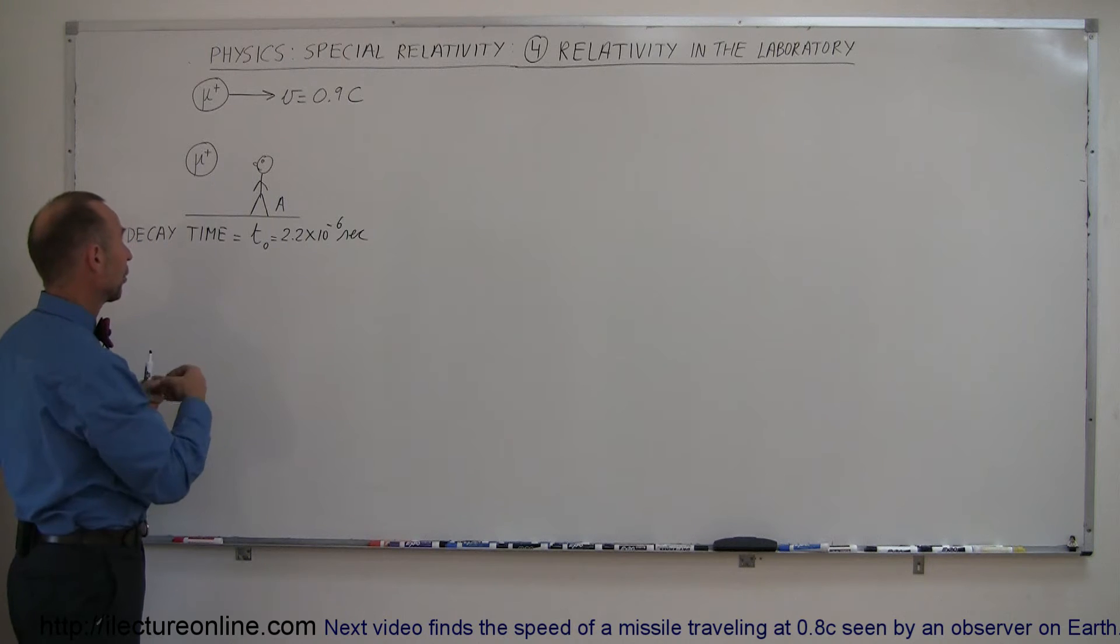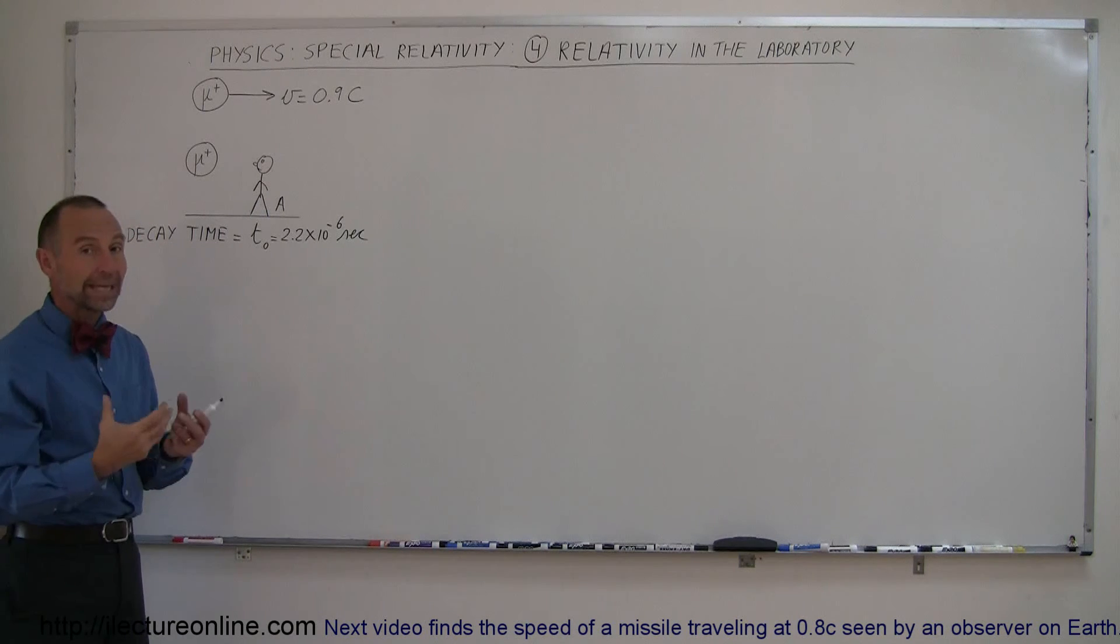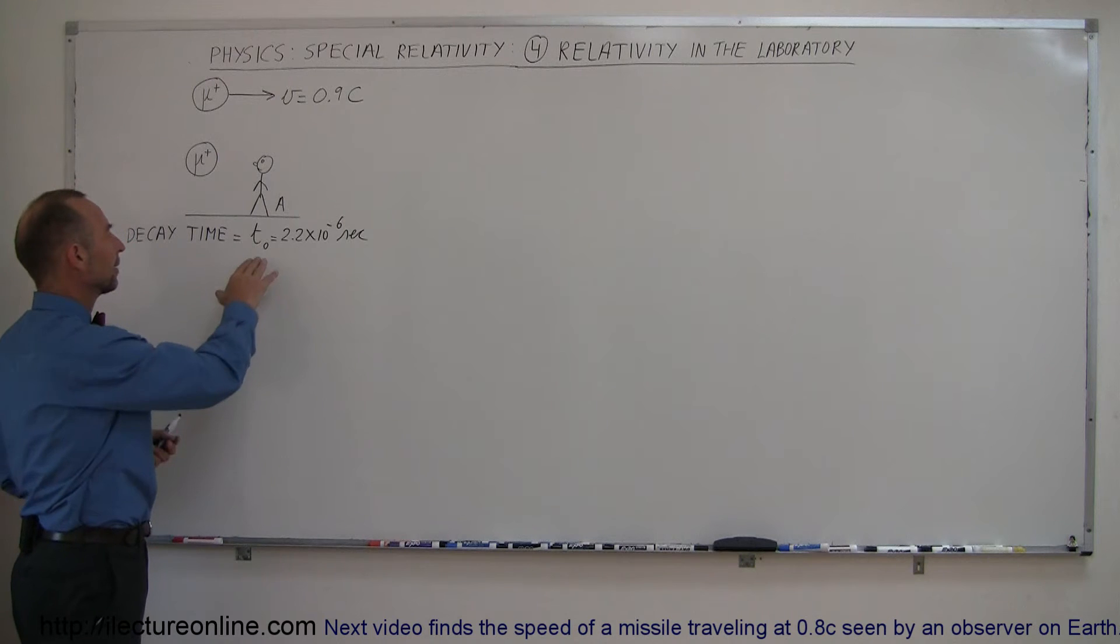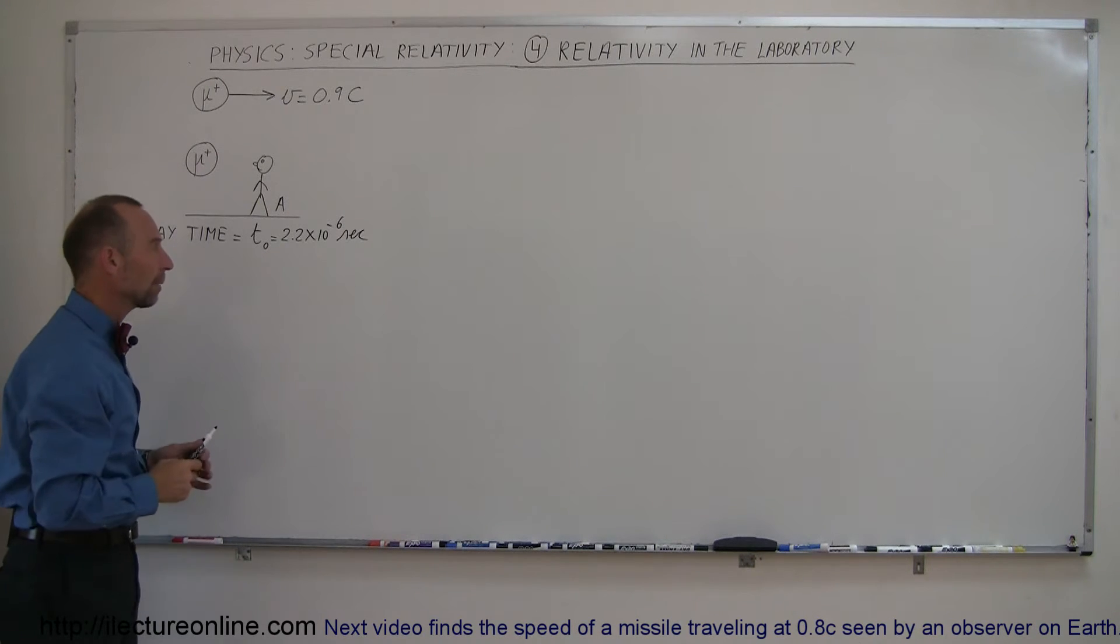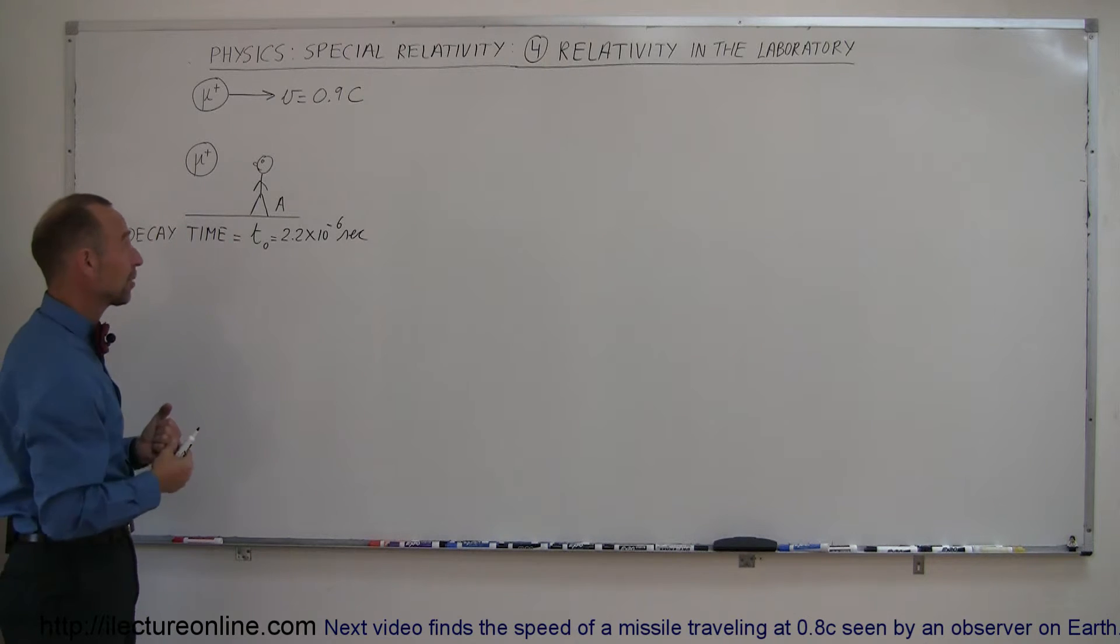So typically after a muon, a positive muon is created in, for example, a big collision, the time that they exist is about 2.2 times 10 to the minus 6 seconds which is 2.2 millionths of a second. So they don't hang around very long before they change radioactively.